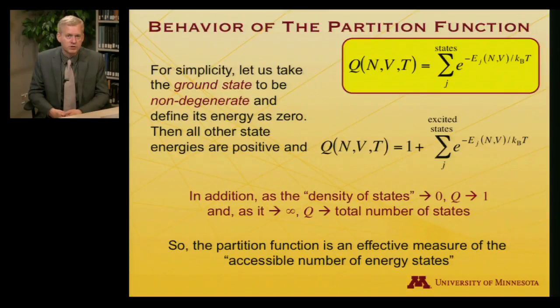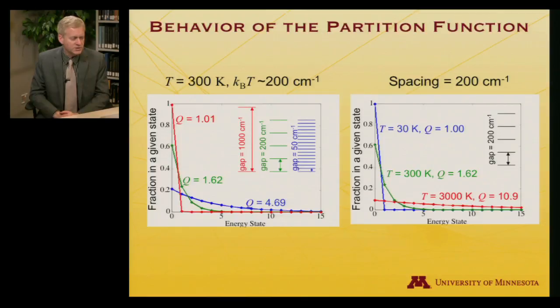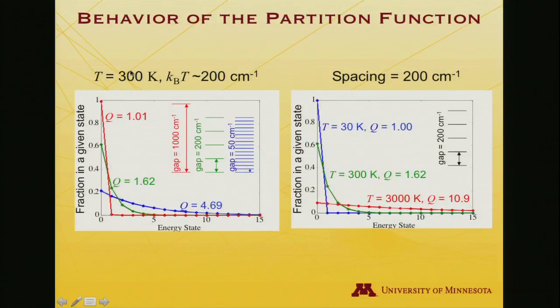So once again, just to emphasize that the partition function then is a measure of the accessible number of energy states. So if you ever see a number associated with a partition function, 5, 30, 10 to the 16th, that's giving you some feel for how many energy states can the system access at the N, V, and T that are specified. And let's actually take a look at a specific example to hopefully make that even more clear. And so first, let me focus on this graph to the left. So what I'm showing you here is for a given temperature, 300 Kelvin.